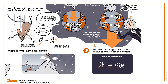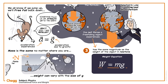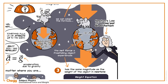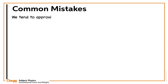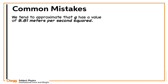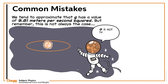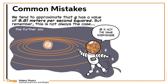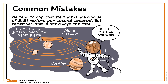While mass is the same no matter where you are, the weight can vary with the size of G, depending on where in the world you are. We tend to approximate that G has a value of 9.81 meters per second squared, but remember, this is not always the case. G is not the same everywhere. The further you get from Earth, the higher G gets. On Mars, it's around 3.71 meters per second squared. On Jupiter, it's over 24 meters per second squared.